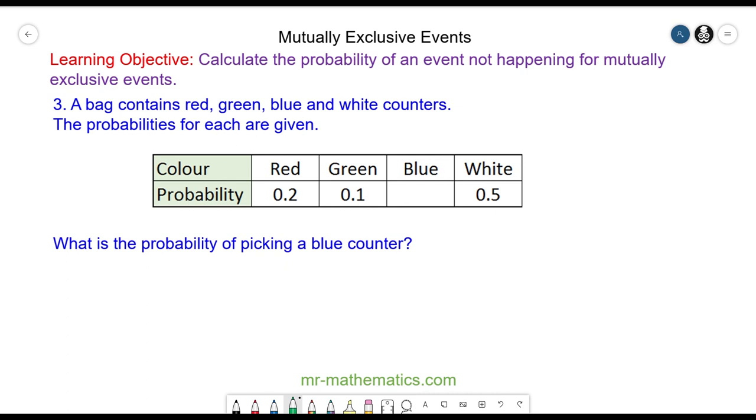We know it is mutually exclusive. He will pick a red, a green, a blue, or white because he cannot pick two colors at once. So the probability of red plus the probability of picking a green plus the probability of picking a blue plus the probability of picking a white will equal one. It is certain that one of the four colors will be picked.